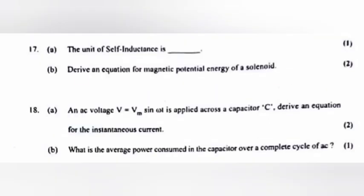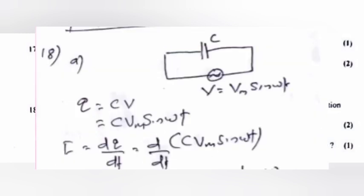An AC voltage V is equal to Vm sin ωt is applied across a capacitor C. Derive an equation for the instantaneous current.